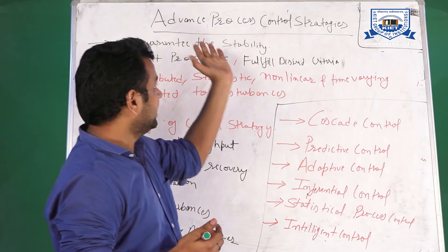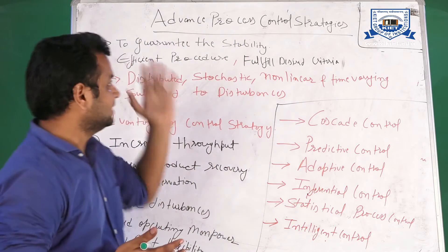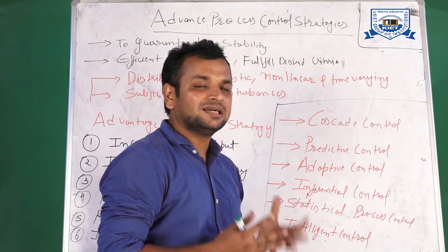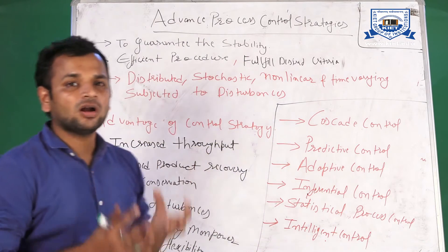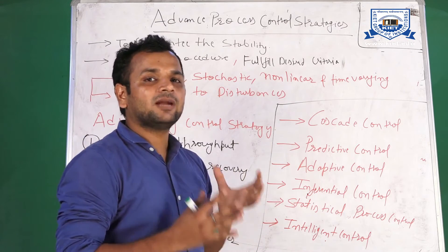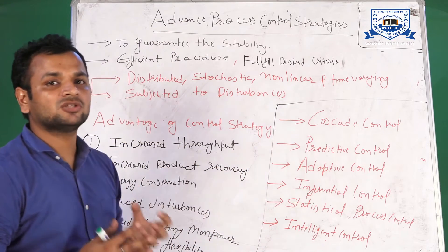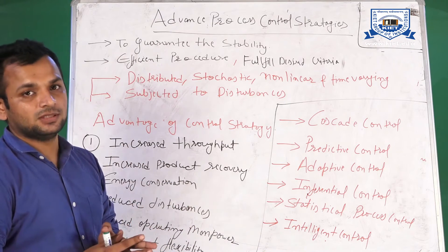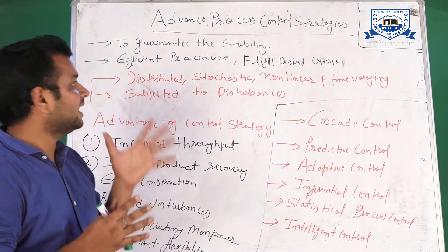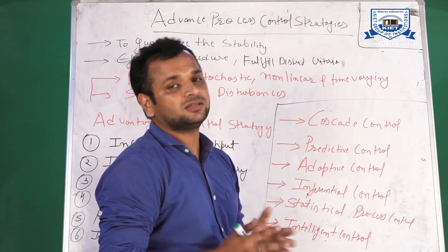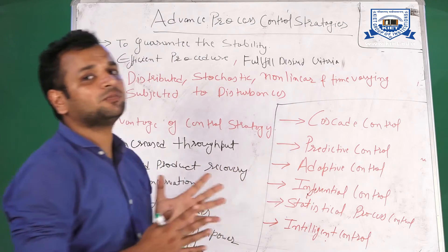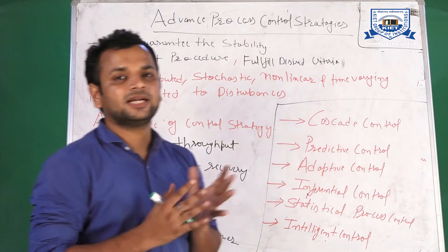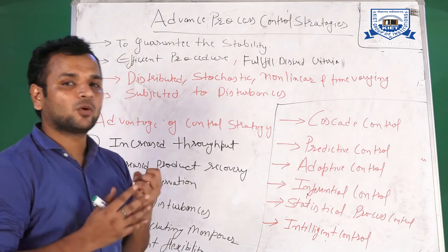This is Unit 4, in which we are going to study advanced process control strategies. In the last unit we saw how we can define or model any process or system. Now the question is how we can control that process. For that, we use advanced process control strategies. This unit is basically based on adopting the control strategy according to the process behavior.